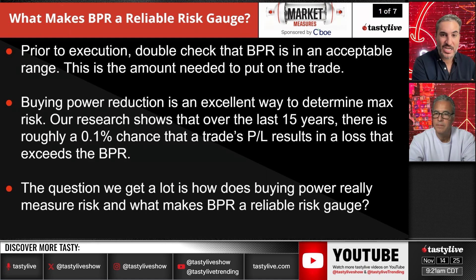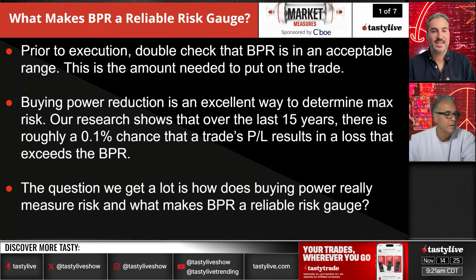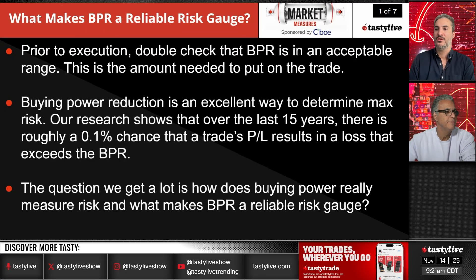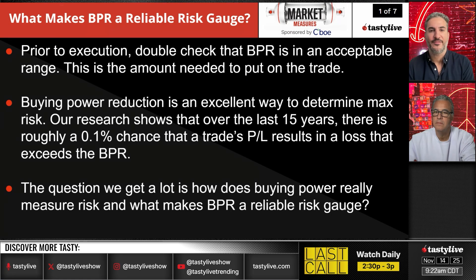There can be exchange parameters, and status like hard-to-borrow can influence buying power. This is very much a dynamic thing when trading options, which is one of the reasons why we always talk about keeping size small and keeping cash available on the sidelines, because a lot of those metrics can change throughout the duration of the trade. Buying power reduction is an excellent way to determine or quantify the max risk on a trade.